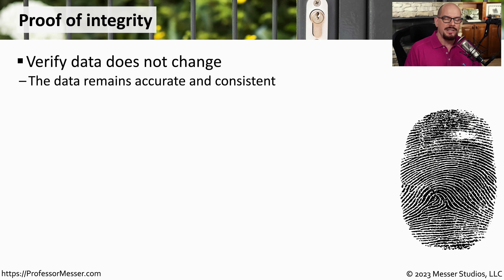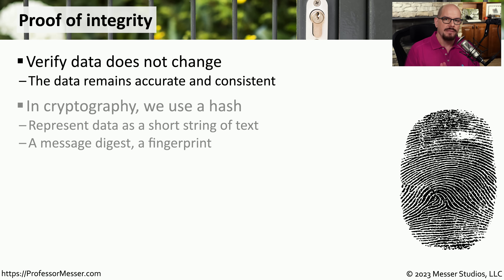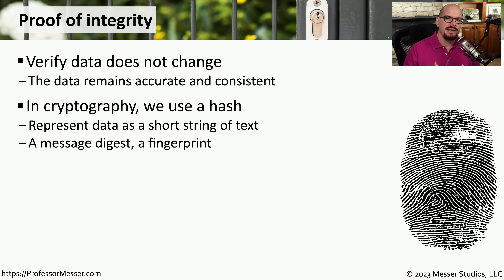Proof of integrity means that any data we've received, we can verify it's exactly the same data that was originally sent. This means the data is accurate and consistent, and nothing inside the data we've received has been changed. In cryptography, we can accomplish this by using a hash — a short string of text created based on the data contained within the plain text. This is sometimes referred to as a message digest, or something like a fingerprint.